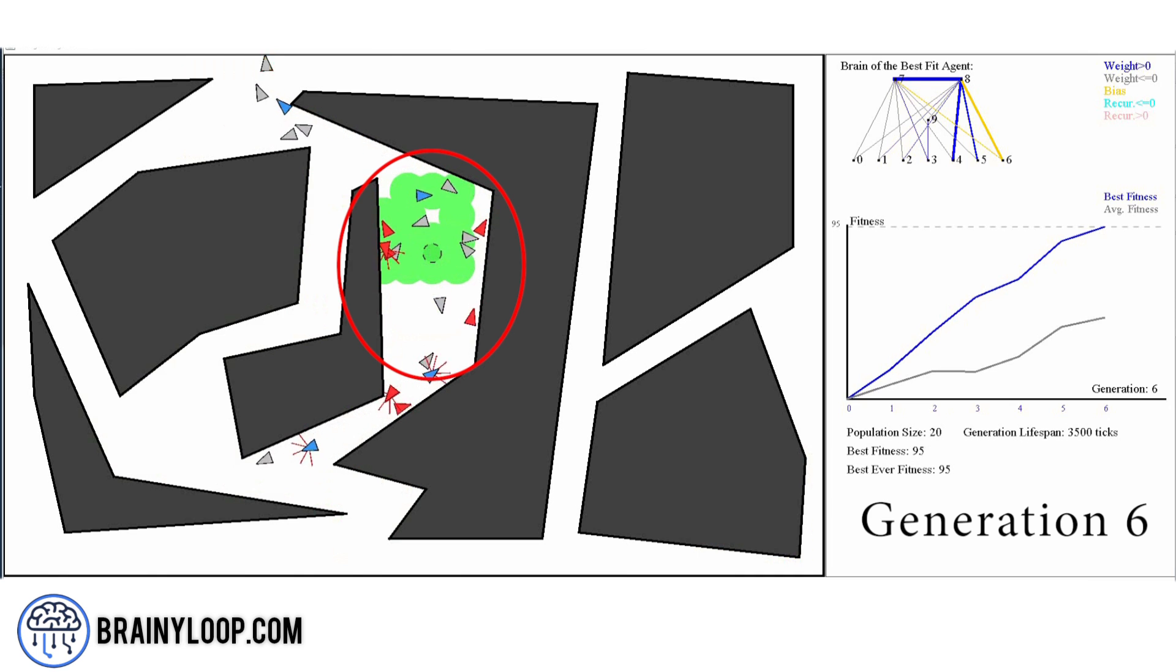If you notice, some agents have learned to avoid obstacles by simply going round in circle near the base. And this is not an optimal solution. By adding a ball in the middle, we can stop this behavior. Because when these agents hit the wall, their fitness would be measured as a lower value and they would be eliminated from the next generations.